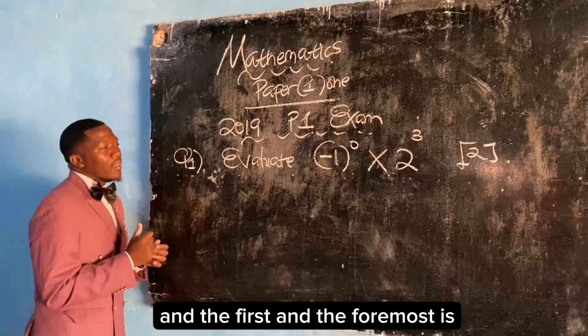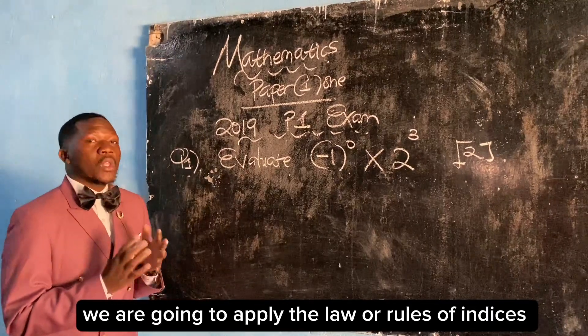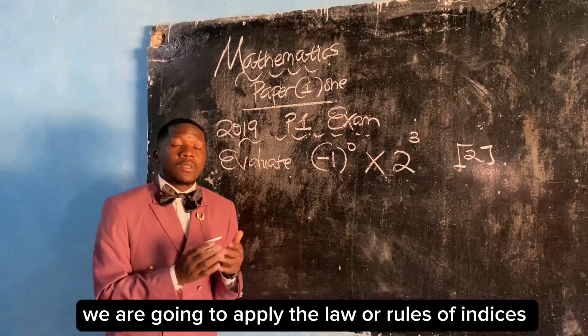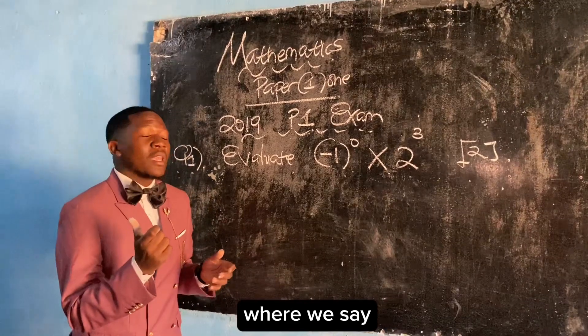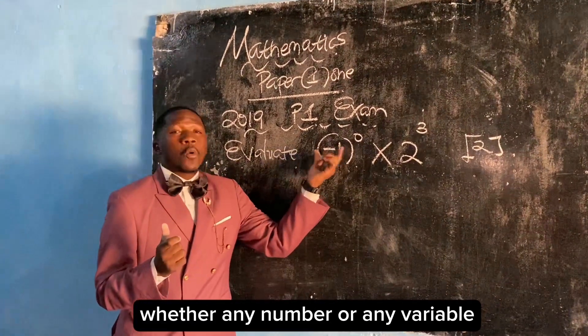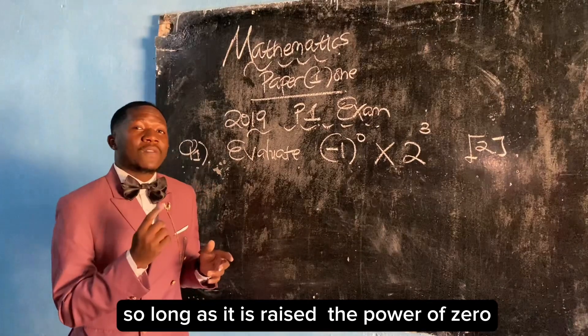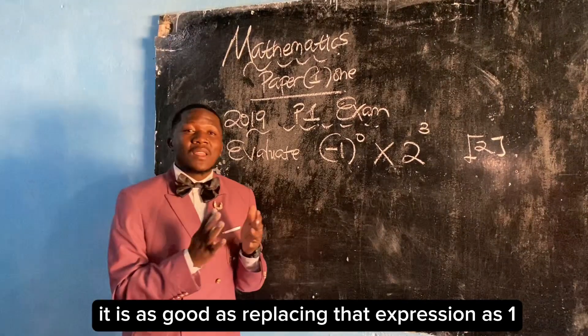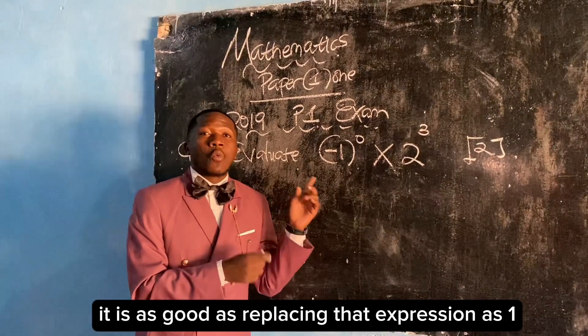First and foremost, we're going to apply the law or rules of indices where we say any number or any variable, so long as it is raised to the power of 0, is equal to 1.